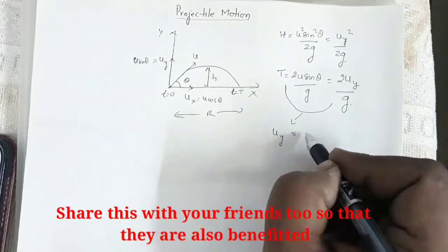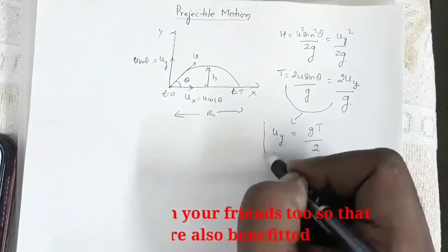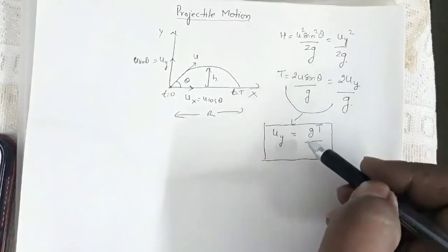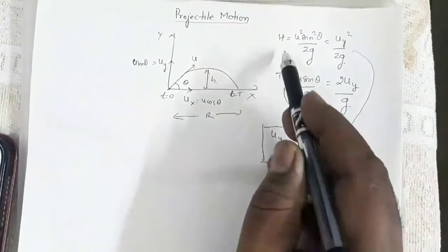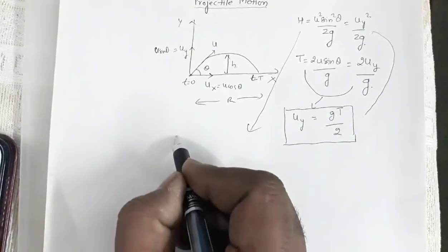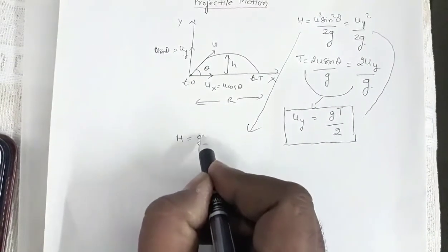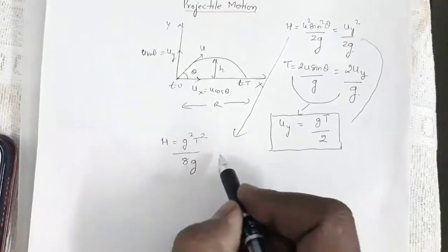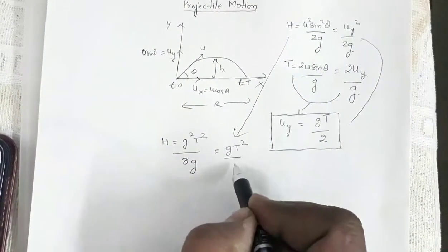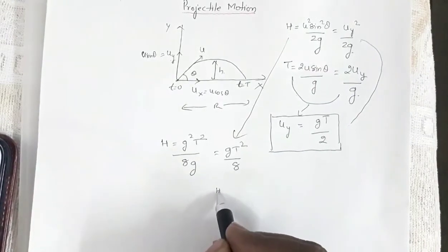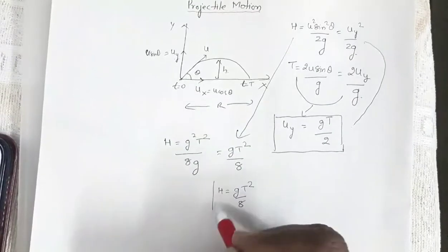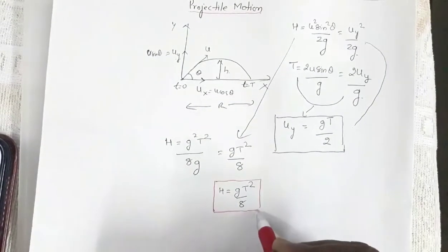From the time of flight relation I can write uy is equal to gT divided by 2. Now substituting uy into the height equation, we get h is equal to g²T² divided by 8g, which equals gT² divided by 8. So the relation between maximum height and time of flight is h = gT²/8.